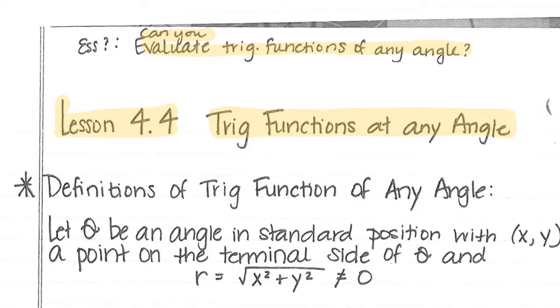Let's talk about some definitions. Let theta be an angle in standard position with (x, y) as a point on the terminal side of theta. R is equal to the square root of x squared plus y squared, where that cannot equal zero.